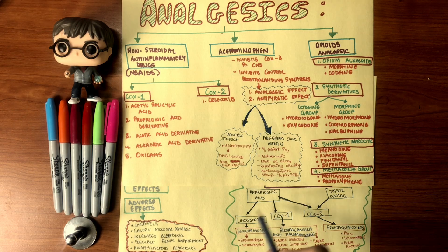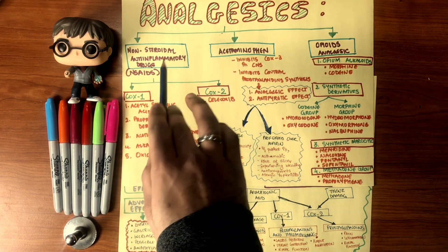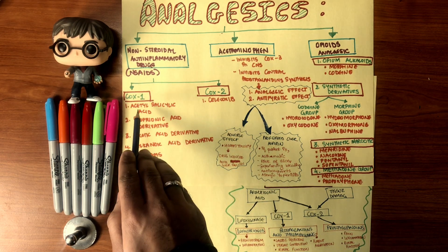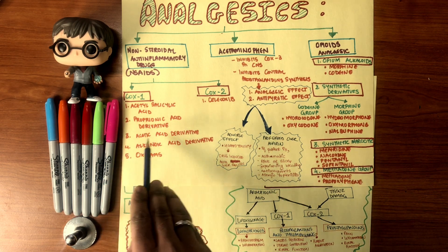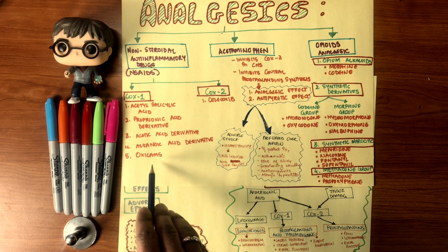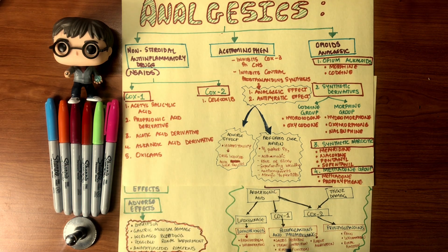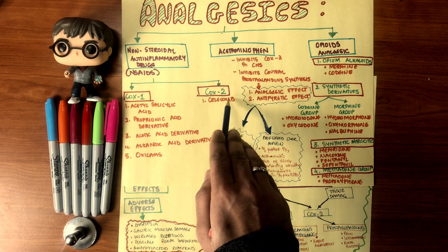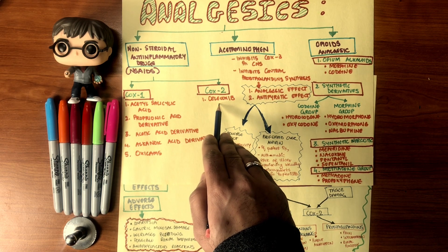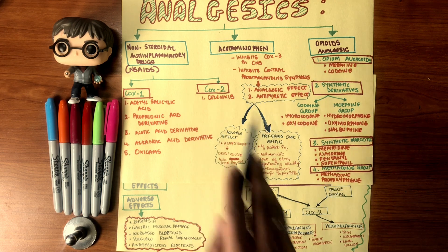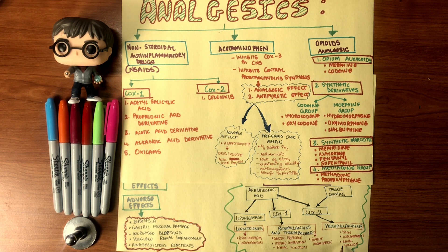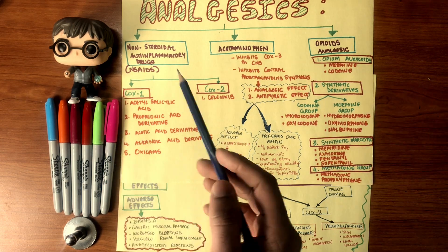Now that we know the functions of COX-1 and COX-2, it's easier to understand NSAIDs. COX-1 blockers include acetylsalicylic acid, propionic acid derivatives, acetic acid derivatives, alkanoic acid derivatives, and oxicams. These drugs block prostaglandin and thromboxane production — so they no longer provide gastric protection, uterine contraction, or maintain renal function, and they won't create platelet plugs. Celecoxib is the only COX-2 blocker currently available, as others were withdrawn due to cardiovascular damage.